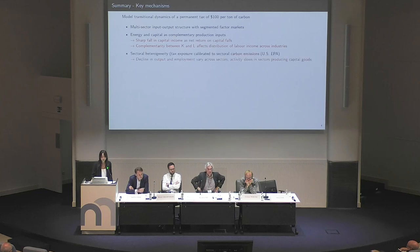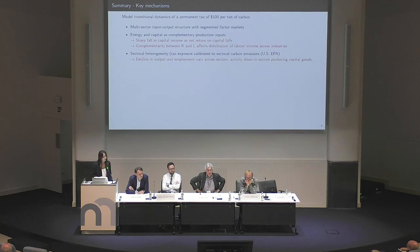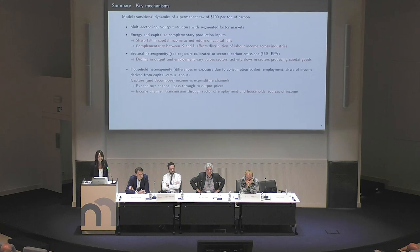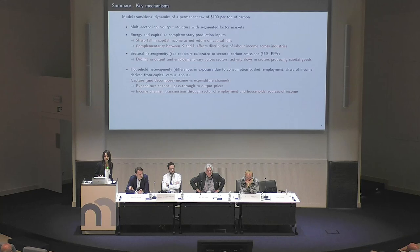Activity slows particularly in sectors that produce capital goods, where labor income falls the most. There is also sectoral heterogeneity, implying that the decline in output and employment varies across sectors. Sectors are linked through the production network, so firms are exposed to the carbon tax not only through their own emissions but indirectly through those of their intermediate goods. There is also household heterogeneity: differences in exposure arise from the consumption basket, employment, and shares of income from capital versus labor. This allows Christian to decompose income versus expenditure channels — expenditure refers to pass-through through output prices, and the income channel operates through sector of employment and sources of income.